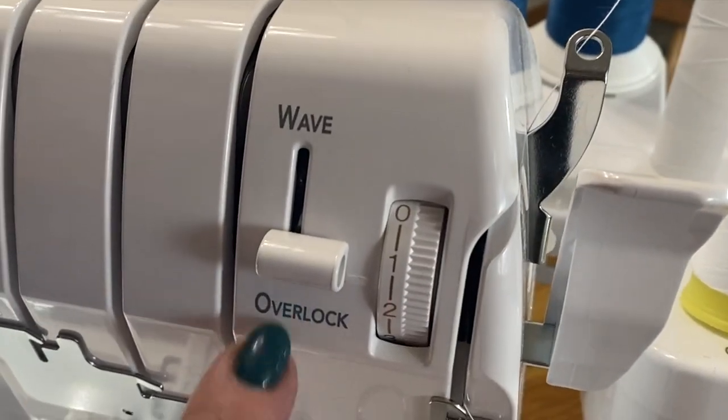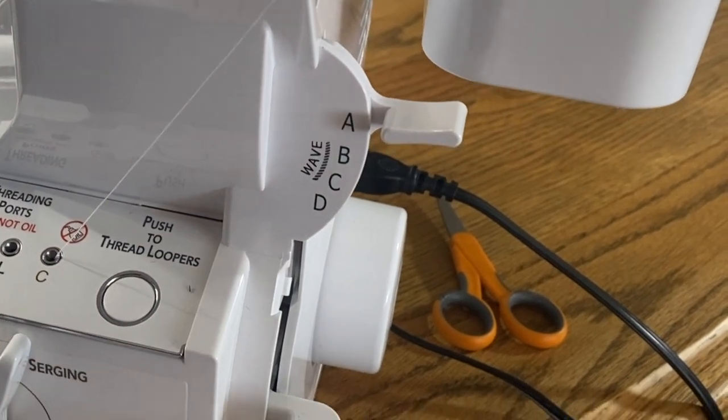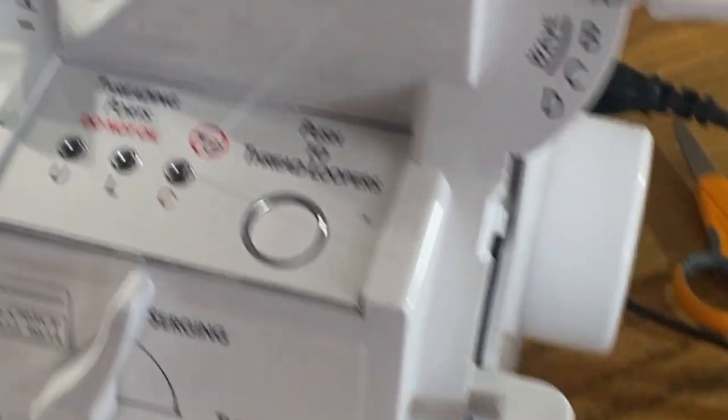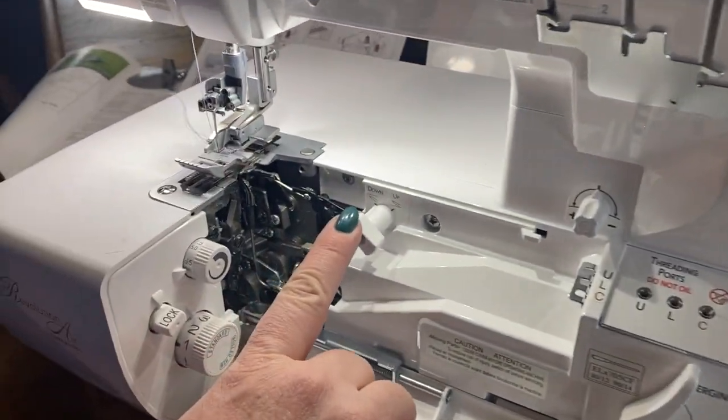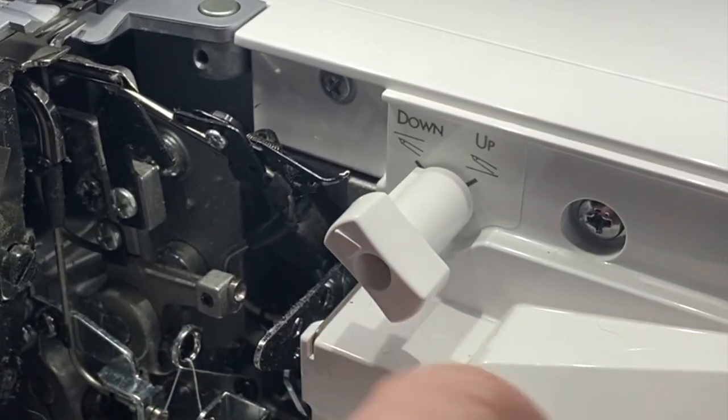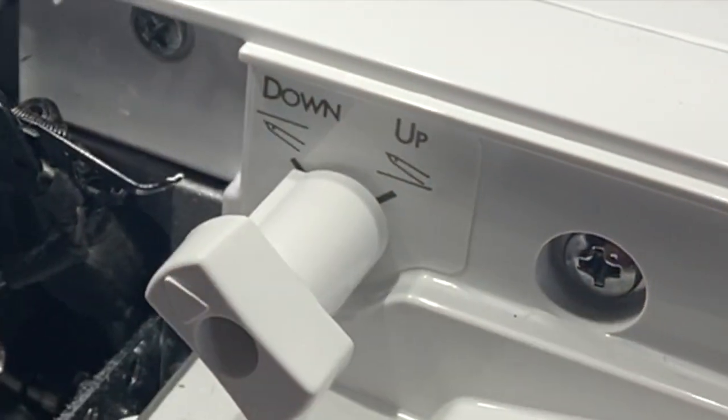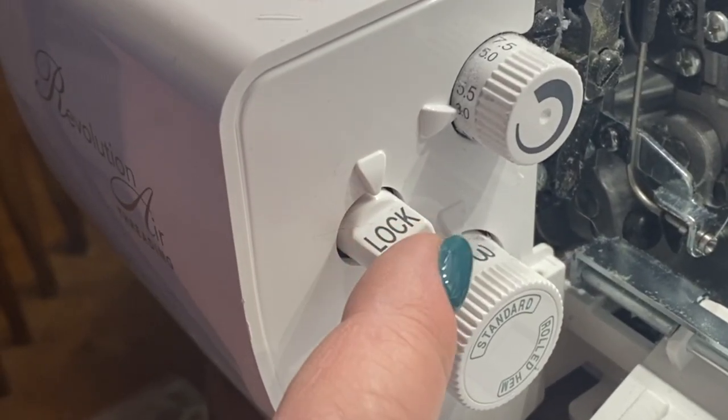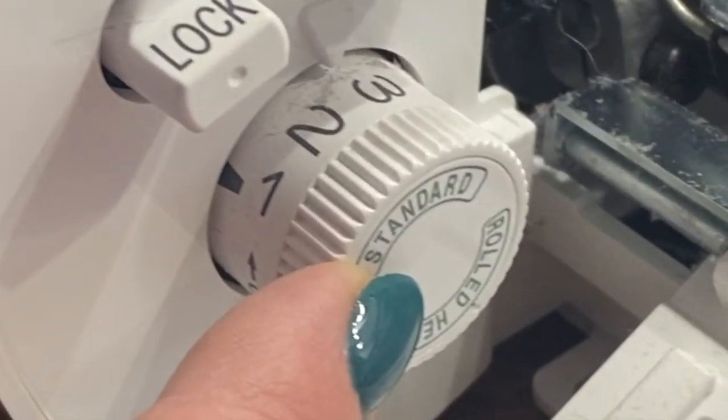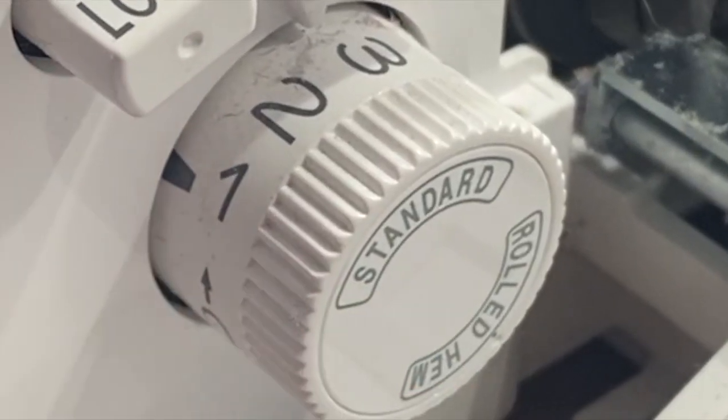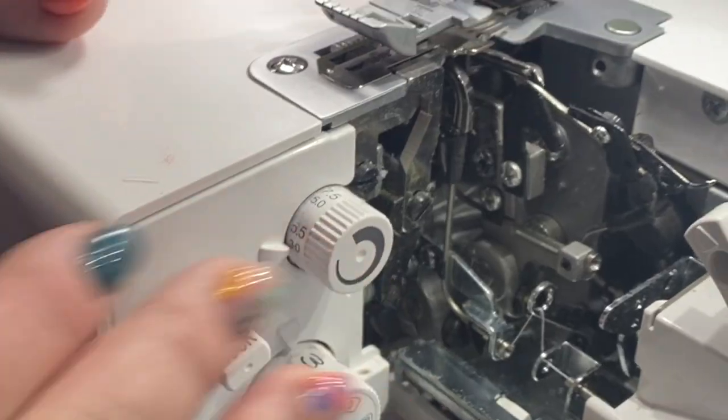This will be down in overlock, the stitch selector doesn't matter, and this will be in neutral. Some important things though is that you have your upper looper set from up to down. Knife will be locked to change your length to about a 3. Your width won't matter because you're not cutting it.